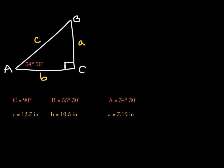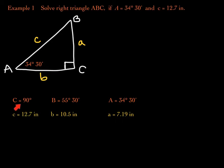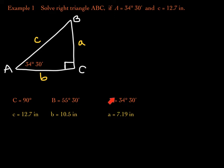Before moving on, notice that the largest angle is 90 degrees, the middle-valued angle is angle B, and the smallest angle is angle A. The largest side is side C, the middle-valued side is B, and the smallest side is A. In other words, the largest side should be opposite the largest angle, the middle-valued side opposite the middle-valued angle, and the smallest side opposite the smallest angle. When you're done with your problem, you may want to confirm this is true for every triangle you solve.